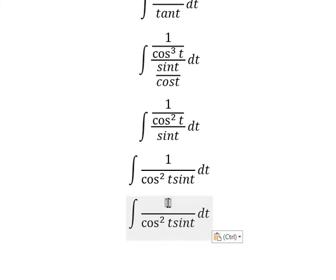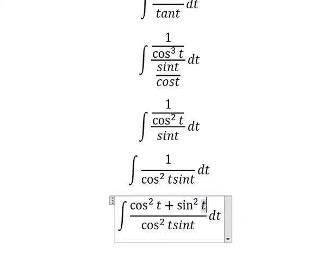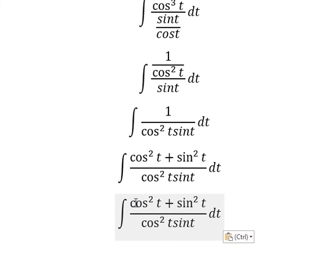And we know that number one is cosine squared t plus sine squared t. So we divide this one by sine squared t. Now we create two functions in here.